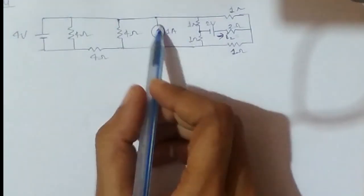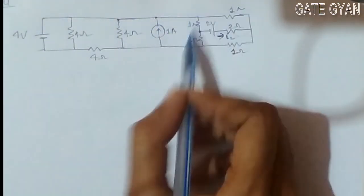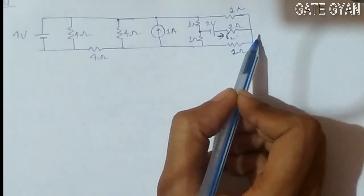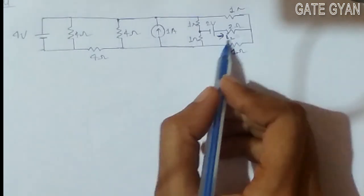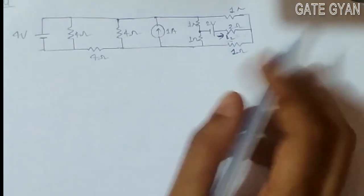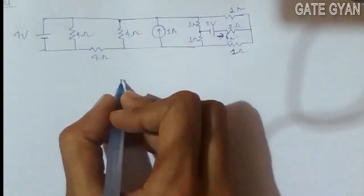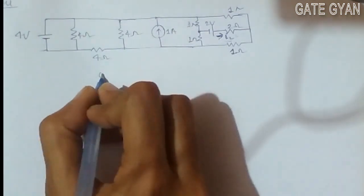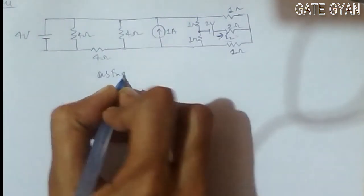Again, for the one ampere source also, this will become a balanced circuit. So the current flowing through this will be zero — that is zero — using superposition theorem.